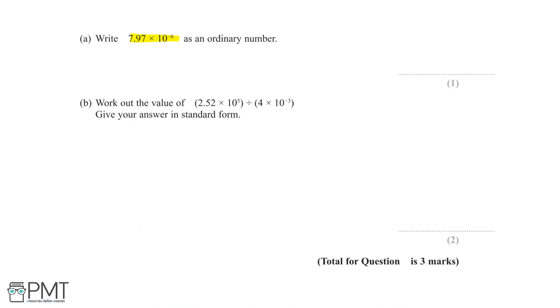Standard form is a way of expressing really large or really small numbers, and it's always given in the form a × 10^n, where a is always a number between 1 and 10.